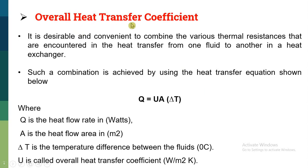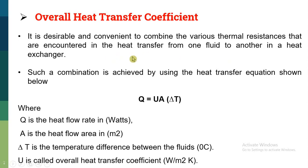Now let us understand what is meant by overall heat transfer coefficient. It is desirable and convenient to combine the various thermal resistances that are encountered in the heat transfer from one fluid to another in the heat exchanger. It means while heat transfer from a hot fluid to cold fluid, we count all the different resistances and combine them together, and we call it the overall heat transfer coefficient. Such a combination is achieved by using the heat transfer equation shown below.